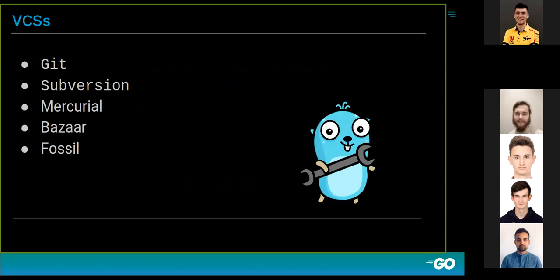A tiny note about version control systems that Go modules support: Git, SVN, Bazaar, Mercurial, and even Fossil are supported. Perforce, for some reason, is not supported — maybe it's for the greater good. That's pretty much about module structure.